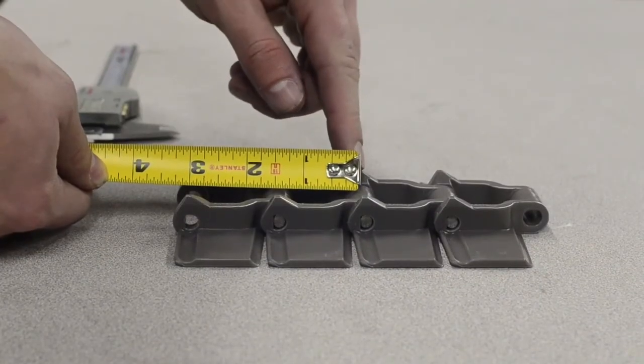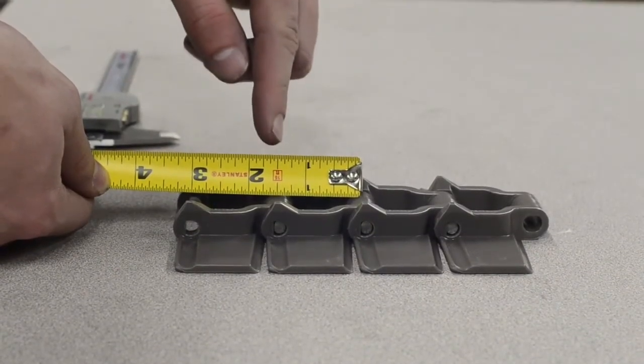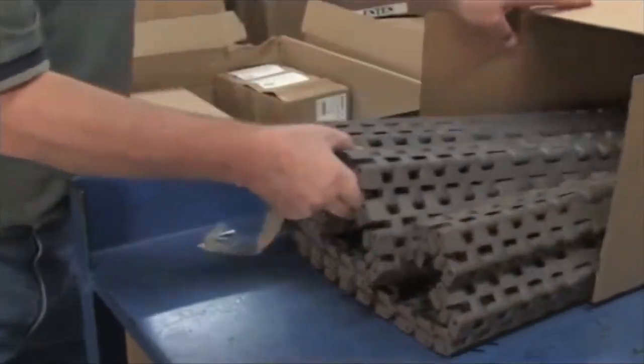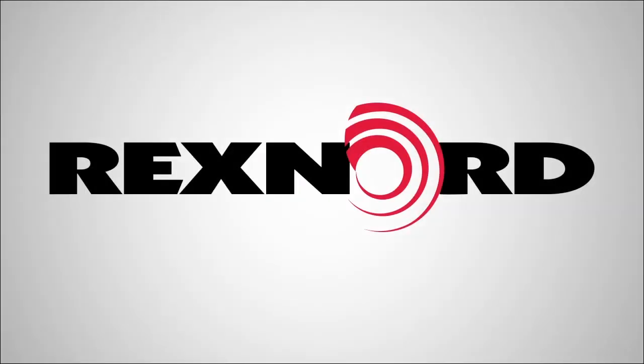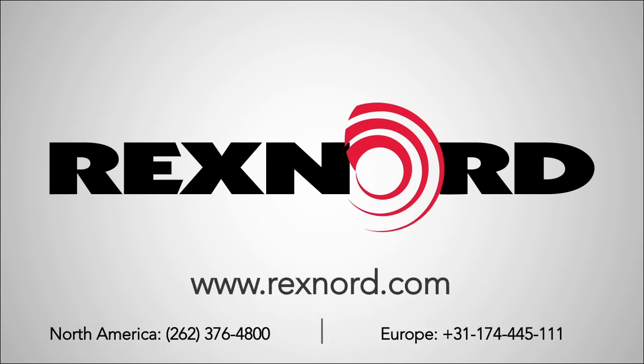By being able to properly identify your tabletop chain, customers can save time and money when reordering chain or troubleshooting problems that may arise during operation. For more information or documentation, please visit rexnord.com or contact Flattop Application Engineering.